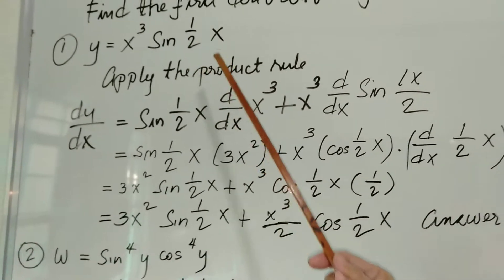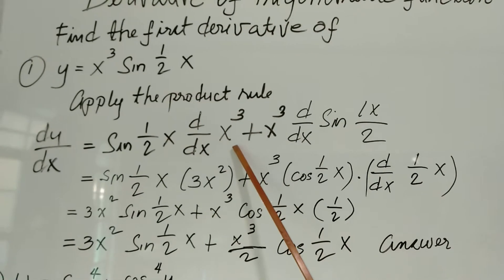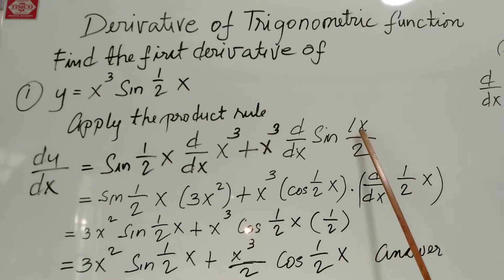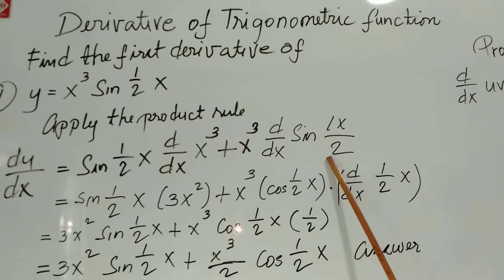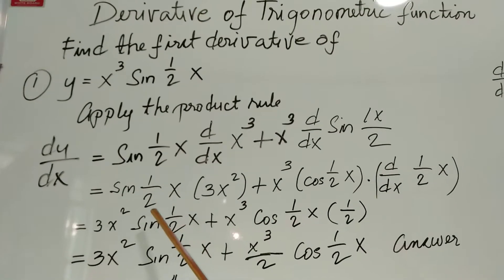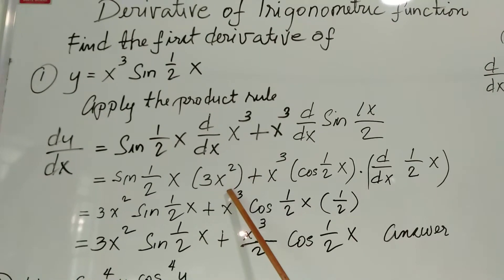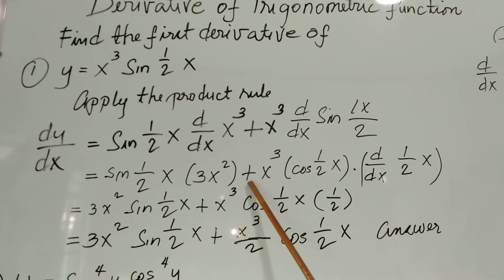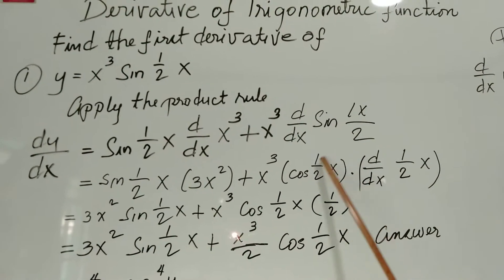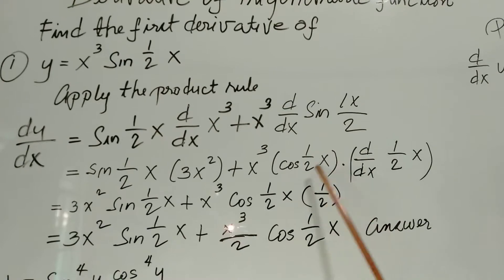dy over dx equals the second term, sine one-half x, times the derivative of the first term x cubed, plus x cubed times the derivative of the second term sine one-half x. Continuing: sine one-half x times the derivative of x cubed is 3x squared.